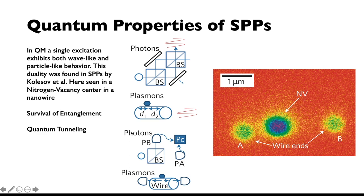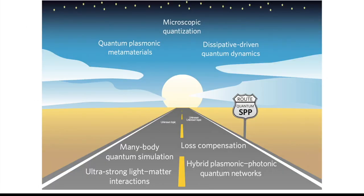There's also survival of entanglement and quantum tunneling, which we'll see later on. So many of the quantum properties of SPPs are still largely unknown. The problem of high loss in plasmonics must be resolved, especially in the quantum regime, to fulfill its highest potential. So here we have the road ahead in this line of research.